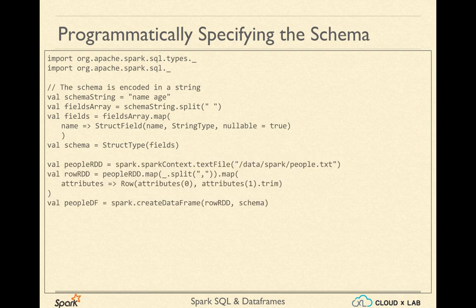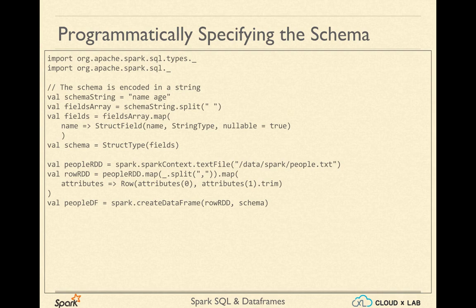The next step is to create the RDD as usual. Here we are creating the RDD from people.txt located in the /data/spark folder in HDFS. The people RDD would be made up of records where each record is a line. Now, let's break each line of text by comma and then create Row objects. Row objects are like array objects — they have no information about the column names.